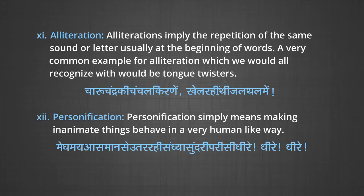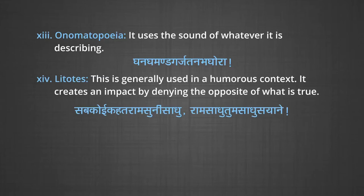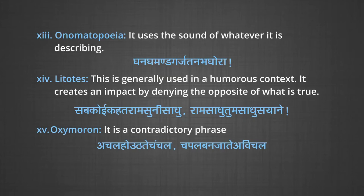Then we go on to personification — it simply means making inanimate things behave in a very human-like way. For example: 'Megh mein aasman se utar rahi sandhya sundari parisi dheere dheere dheere.' Onomatopoeia — it uses the sound of whatever it is describing. For example: 'Ghan ghamand garjat nabh ghora.' Then litotes — this is generally used in humorous context; it creates an impact by denying the opposite of what is true. Oxymoron — it is a contradictory phrase. For example: 'Achal ho urte chanchal chapal ban jate abhi chal.'